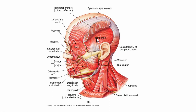Underneath the temporoparietalis is the temporalis muscle, one of the main muscles of mastication or chewing. Another muscle of mastication is the masseter muscle, which allows for a nice strong bite. The buccinator muscle is used to push food away from the teeth and move it around inside the mouth. If you play the trumpet or trombone, that's the muscle you tighten to keep your cheeks from blowing out. It's also the muscle that can push your cheek into your teeth, causing you to accidentally bite the inside of your cheek.